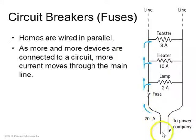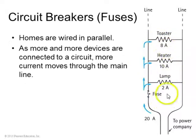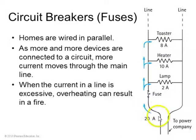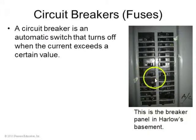That's why homes are always wired in parallel. A line through your house might carry 20 amps — maybe 2 amps go through a lamp, 10 amps through a heater, 8 amps through a toaster — and that adds up to the total power through the line. When the current through a line is excessive, overheating can result in a fire, which is why we have circuit breakers.